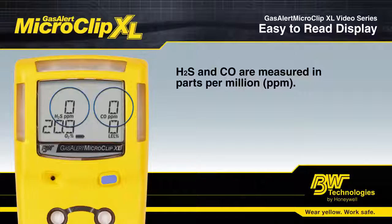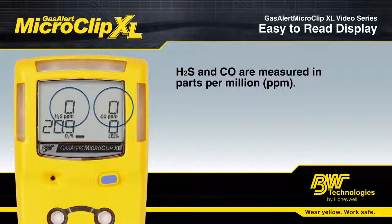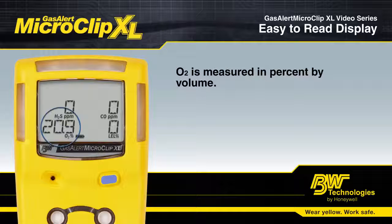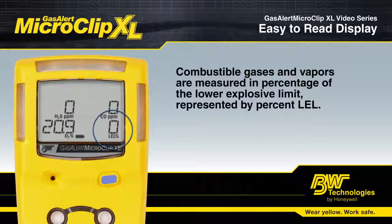When your detector is in standard operation, you will see the concentration readings displayed simultaneously. Hydrogen sulfide and carbon monoxide are measured in parts per million. Oxygen is measured in percent by volume. Combustible gases and vapors are measured in percentage of the lower explosive limit, represented by percent LEL.